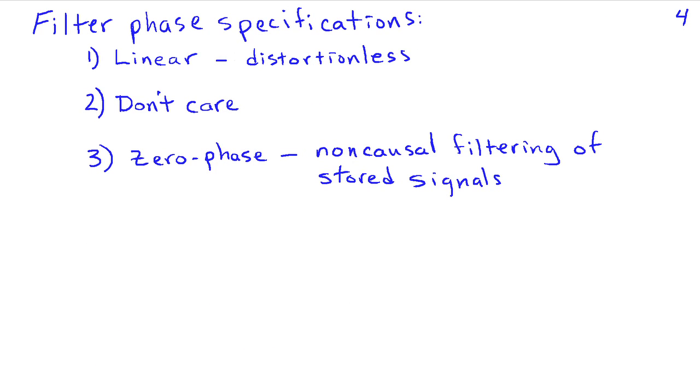Now, filter phase specifications are typically in one of three categories. One can say that we require a linear phase filter so that we're introducing no phase distortion at most of time delay. And that leads us down a particular path for designing the filter.